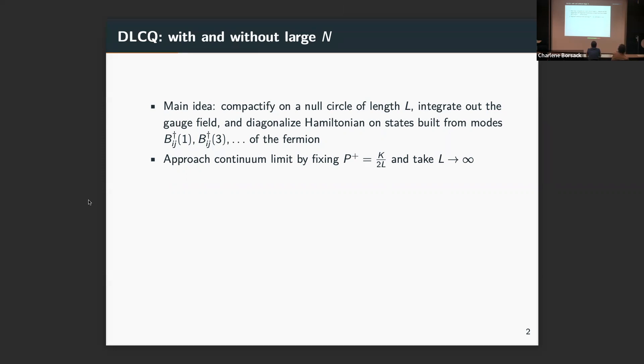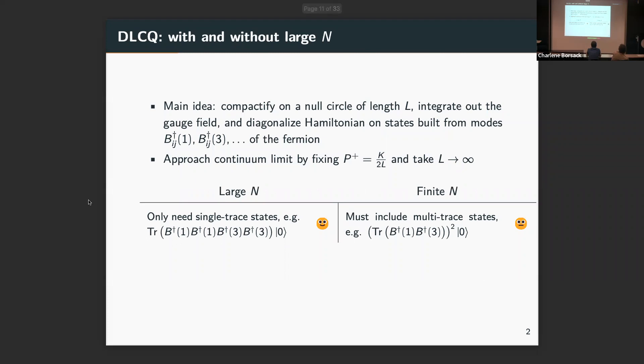We can fix it in units of one over the length of that null circle and then take the null circle length to infinity, decompactifying so that we'll recover a continuum spectrum. That's generally true. Let me compare large and finite N. The first difference you might think of is that for large N we have factorization. For finite N we don't.